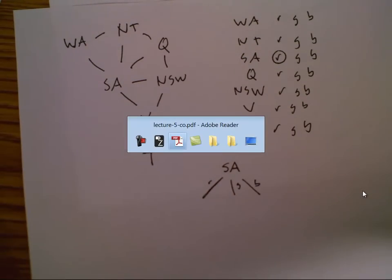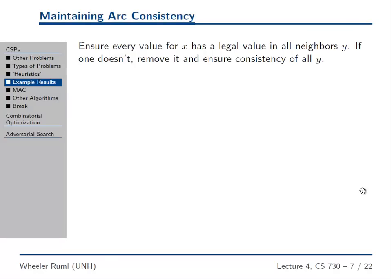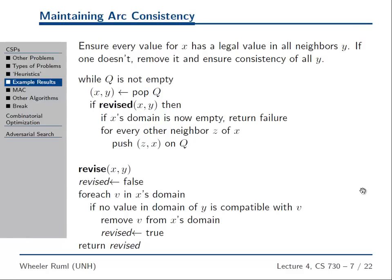The wording of the algorithm is a little awkward — let me show you what it is. Ensure every value for X has a legal value in all neighbors Y. This is the main routine, and it calls the subroutine called 'revise.' Revise checks X and Y to make sure that for every variable in X's domain, there's a value in Y that's compatible.